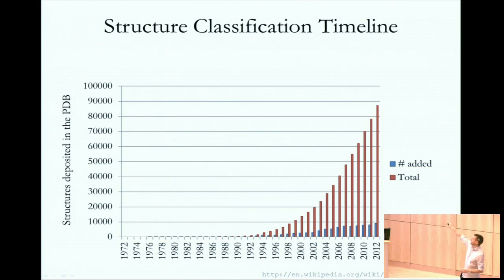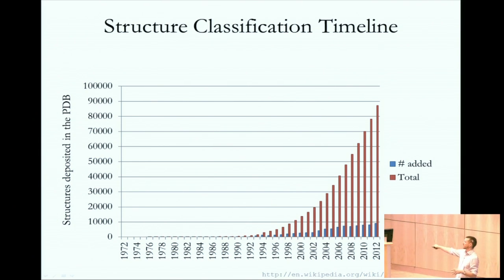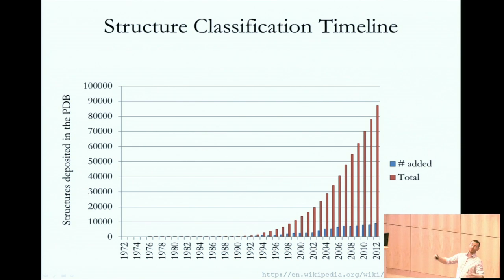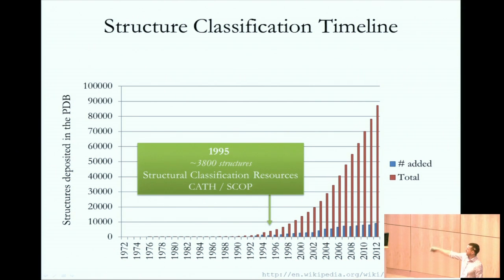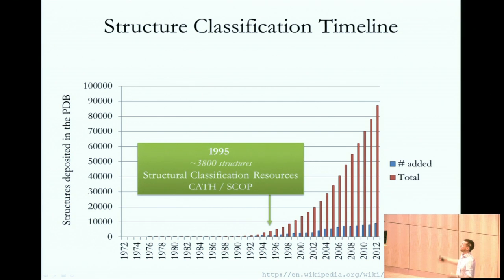We've seen this graph this morning — structures being deposited into the central repository, the PDB. It started in the 1970s, and around 20 years ago it kind of exploded, with lots and lots of structures coming in. Around 1995, this is when structural classification resources, CATH and SCOP, came into being — when there were about less than 4,000 structures in the PDB.